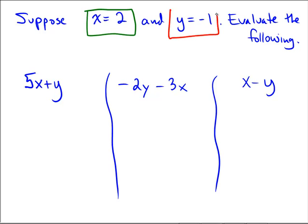I'll highlight this in green and red or box it in green and red. Our first expression is 5 multiplied by x plus y. x is being replaced with 2 and y is being replaced with negative 1.